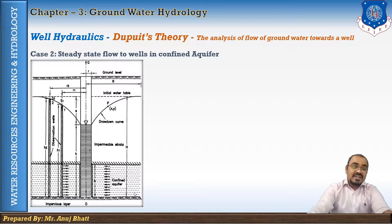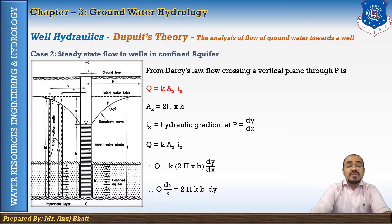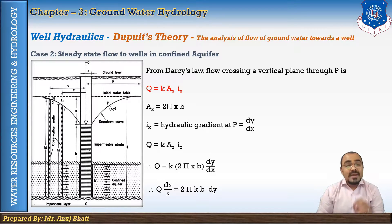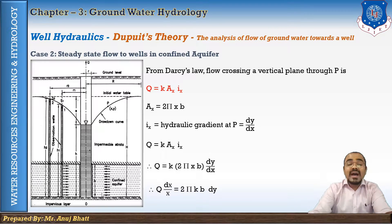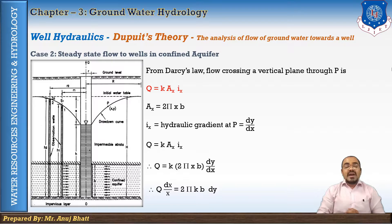As you can see in this figure, the confined aquifer is completely filled with water and does not have a free water table because the above surface is also impermeable and the bottom surface also has an impermeable layer. To find out discharge for such an aquifer, Dupuit assumed that flow is laminar, so we can use Darcy's law. The flow crossing a vertical plane at point P is q = k * Ax * ix.